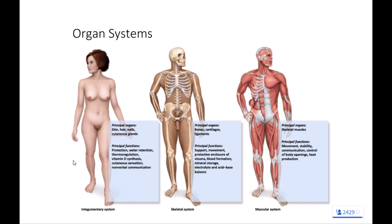Some other functions of our integumentary system include thermal regulation. We've all had goosebumps and been shivering a little bit — that's part of our integumentary system giving us some thermal regulation. We also have our skeletal system, whose primary function is structural support for our bodies. It's also the attachment point of our skeletal muscle system, so it allows us to move. There'd be nothing for our muscles to pull against — because muscles only pull, they never push — without our skeleton.